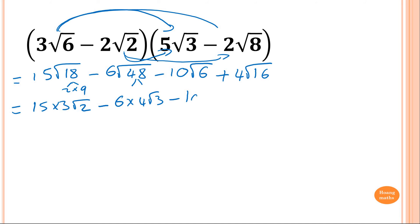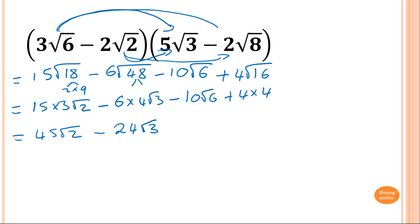So minus 10 root of 6. And 16 is another 4 because 4 times 4, so square root of 16 is 4, giving 4 times 4. Now tidying up: 15 times 3 is 45, square root of 2. And 6 times 4 is 24, square root of 3. Minus 10 square root of 6 plus 16. Can I simplify anything else? No, there are no like terms, so that's the answer.